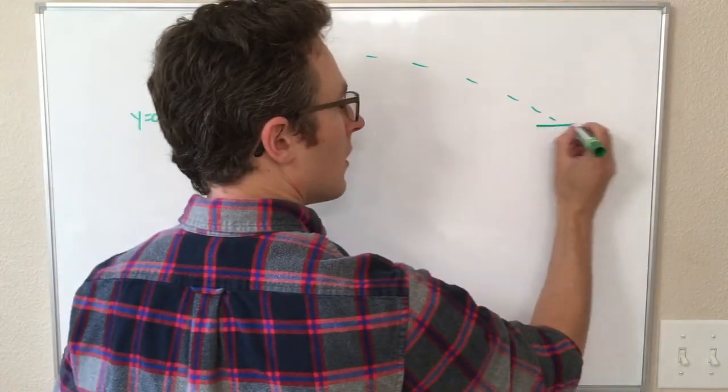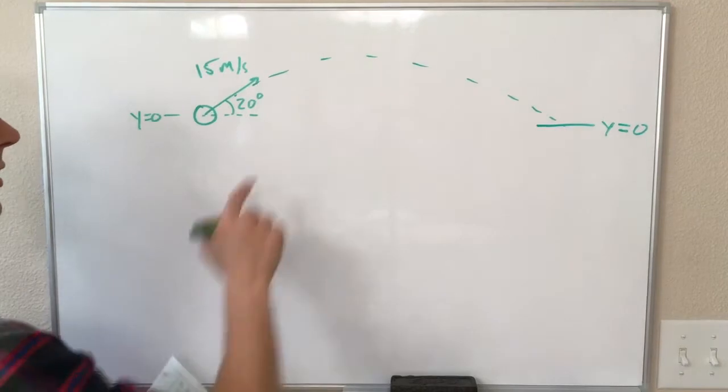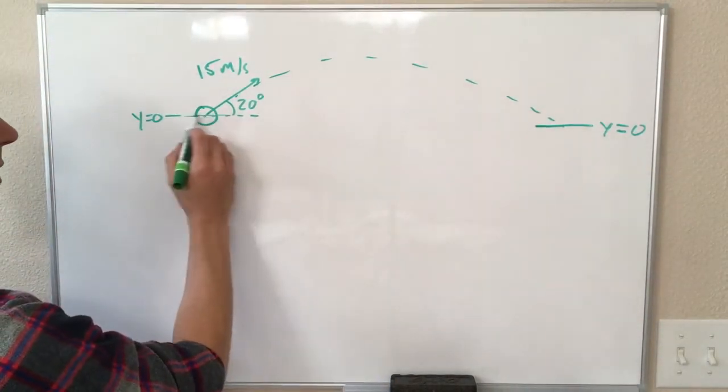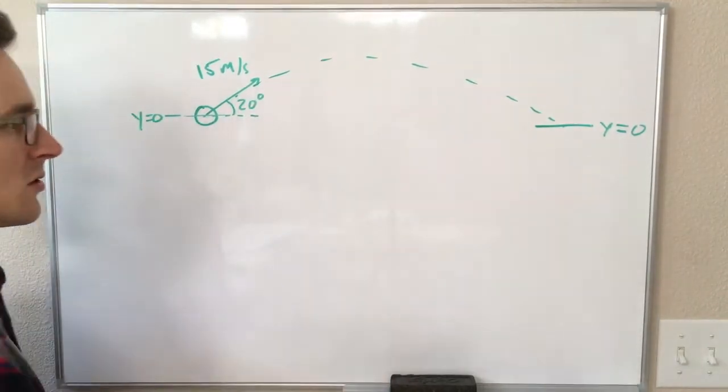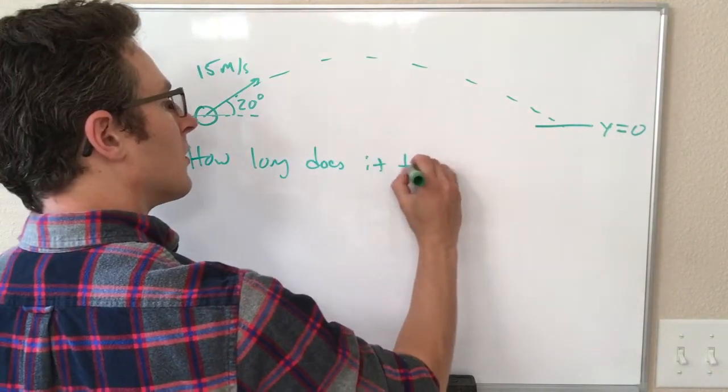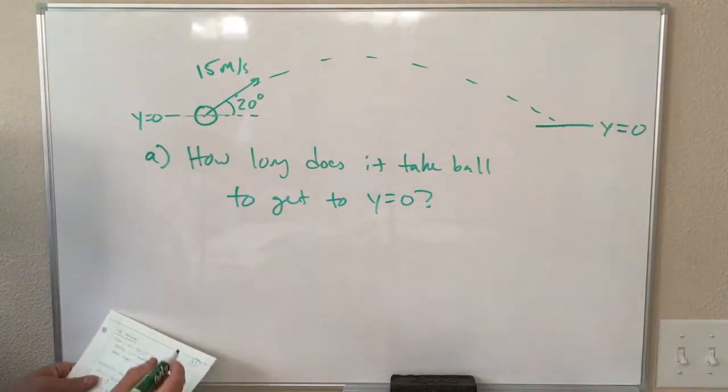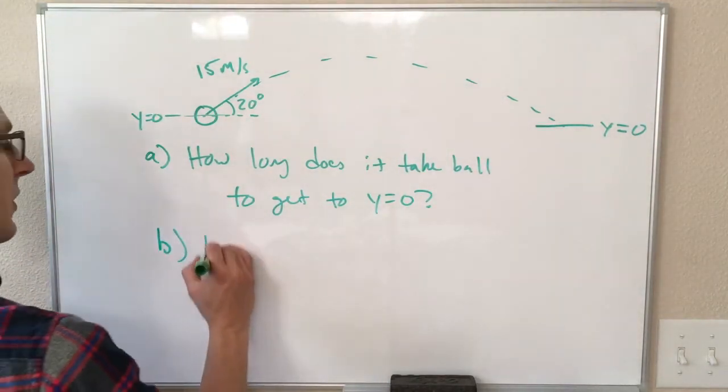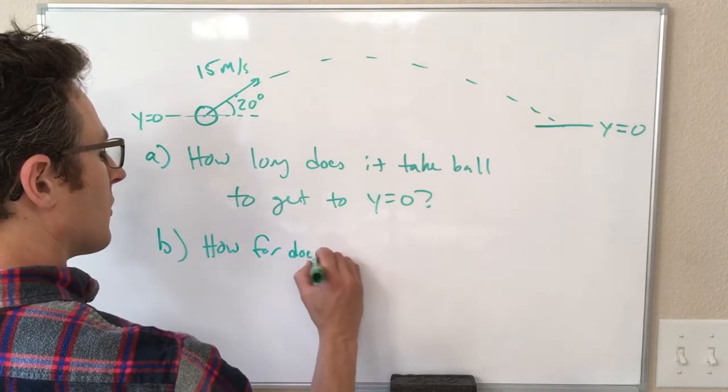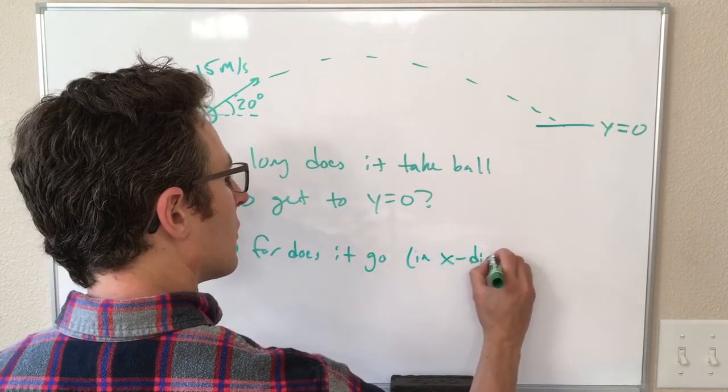So the question is, how long will it take it to get to this height of y equals zero? So if it's thrown from ground level, how long does it take it to hit the ground? That's part A. Part B will be how far does it go? And by that, I mean in the x direction.